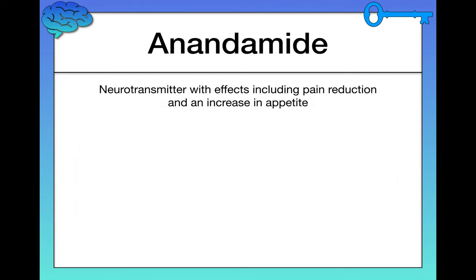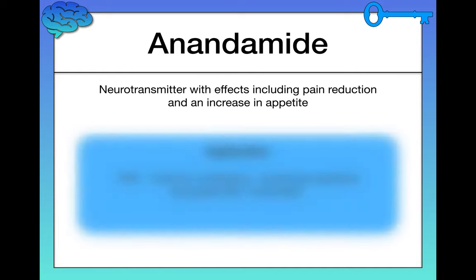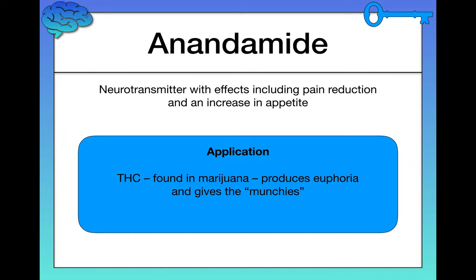As one last example, we have anandamide, a neurotransmitter with effects including pain reduction and an increase in appetite. What does this remind you of? Marijuana — THC, which is found in marijuana, produces euphoria and pain reduction, and also gives you the munchies, increasing your appetite. So a lot of these things come up in daily life.